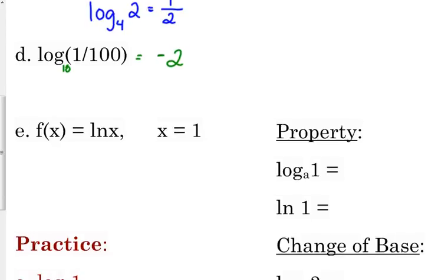Example e: f of x is equal to the natural log of x. Natural log has a base of e. The natural log of 1, that's e to what power is 1? Well, that is 0. So there's a property that we need to know. Log base a of 1, it doesn't matter what the base is, that answer is going to be 0. The natural log of 1 is 0. Anytime you have a 1 inside of your logarithm, the answer is automatically 0 because any base to the power of 0 is the only thing that's going to give you 1.